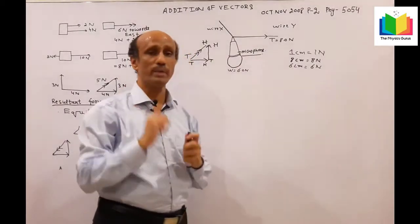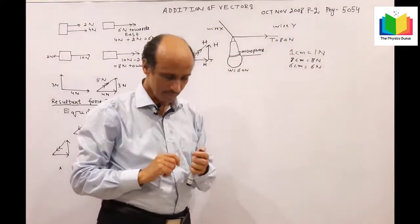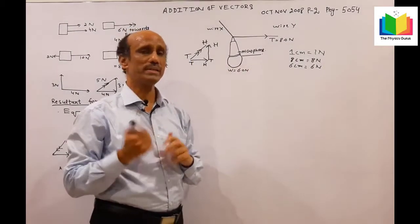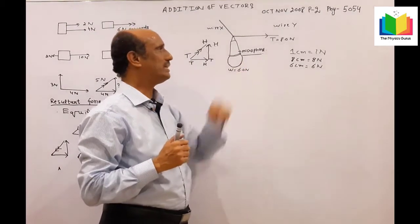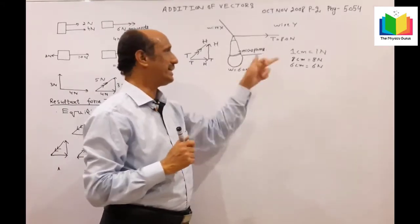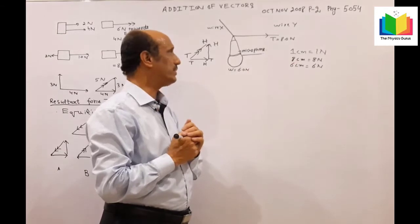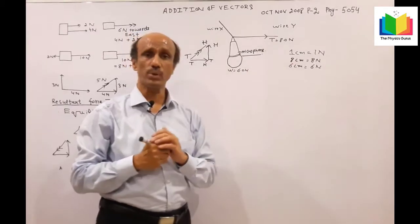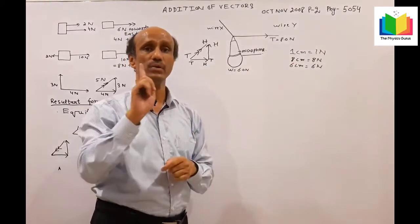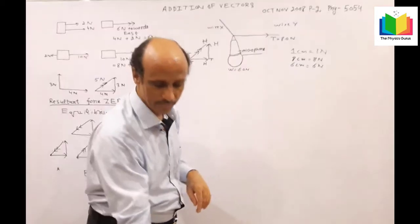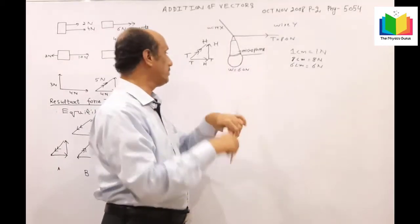This question contains four marks. The first step is to write down a proper scale. I have written that 1 centimeter equals 1 Newton, then 8 centimeters equals 8 Newtons, and 6 centimeters equals 6 Newtons. Out of four marks, you will get one for writing this.